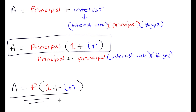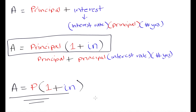That is how most people remember it — APIN. And it makes logical sense: the amount you pay back is just your principal plus any interest, and P(1 + in) is exactly how we calculate that. You can either remember the formula or break it down logically to get the same answer. In the next video we will go over many examples using this formula, and by the end it should be very clear.